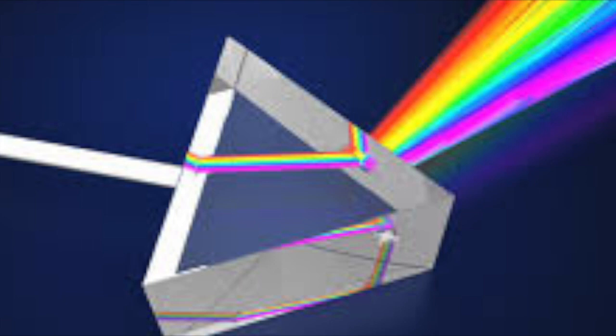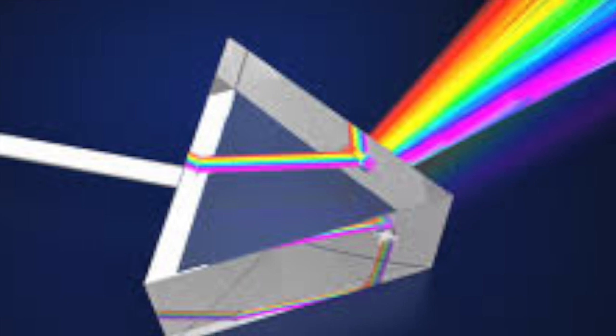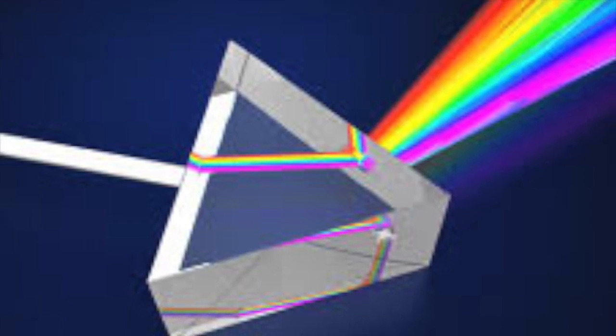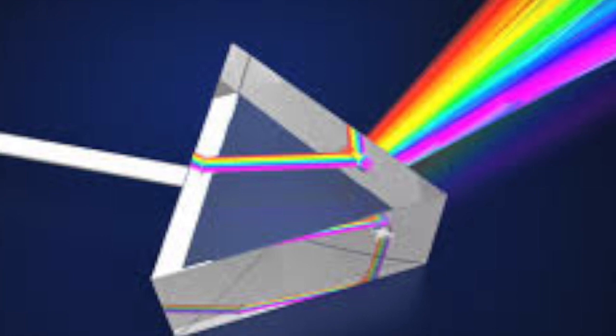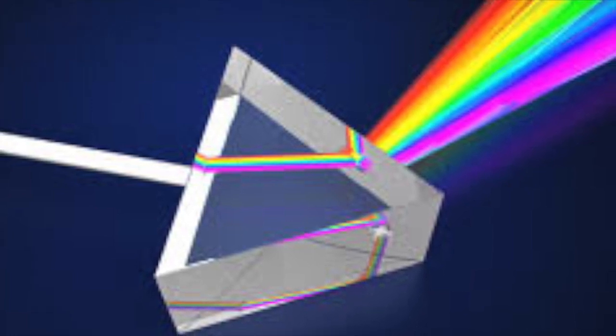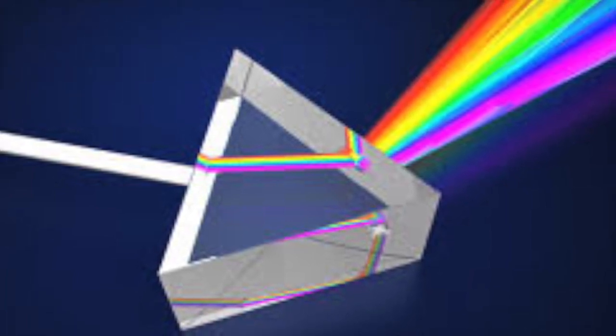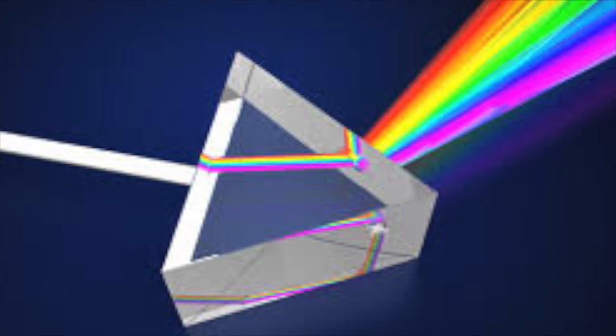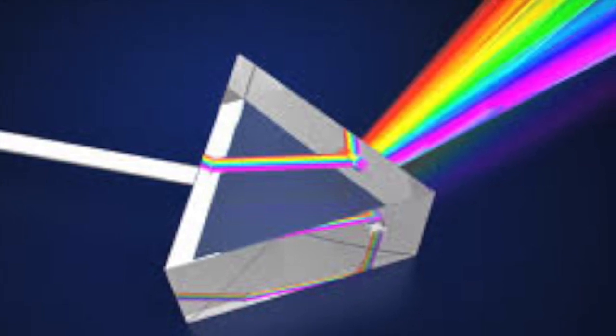Newton showed that a second prism could recombine all the colors back into white light, and when shown through another prism, the colors would remain the same.